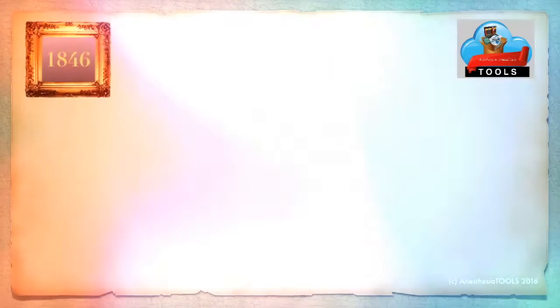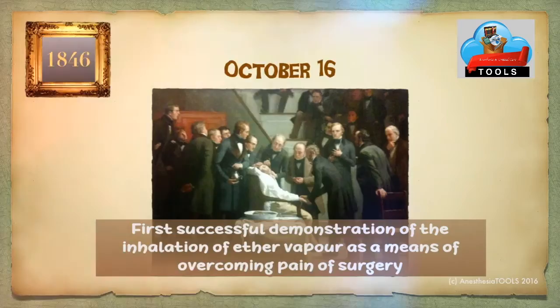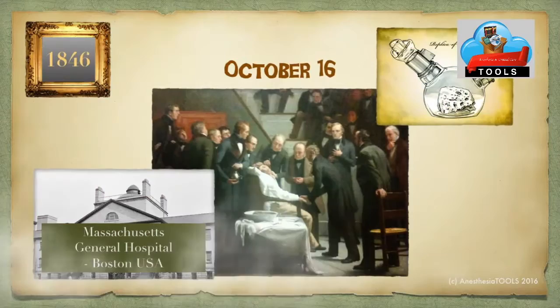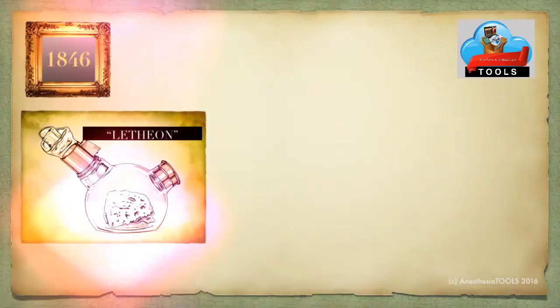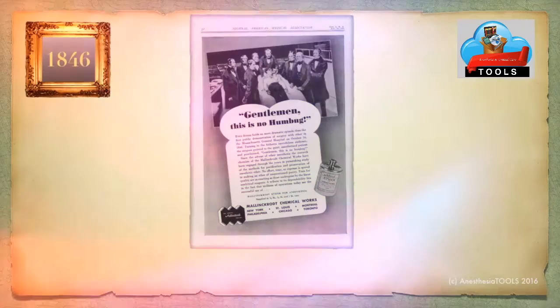History of anesthesia dates back to October 16, 1846, when William Thomas Green Morton first demonstrated ether as an anesthetic for removal of a tumor of the neck. Morton tried to hide the identity of the agent by referring to it as lethium, but it soon was found to be ether.